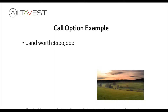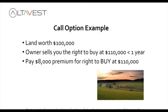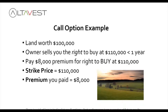Here's an example looking at real estate. Land is worth a hundred thousand dollars — this nice piece of land — and the owner sells you the right to buy that land at $110,000 in less than a year. You pay $8,000 for that right to buy at $110,000. That's the premium. The strike price is $110,000, the premium is $8,000, and expiration is one year.